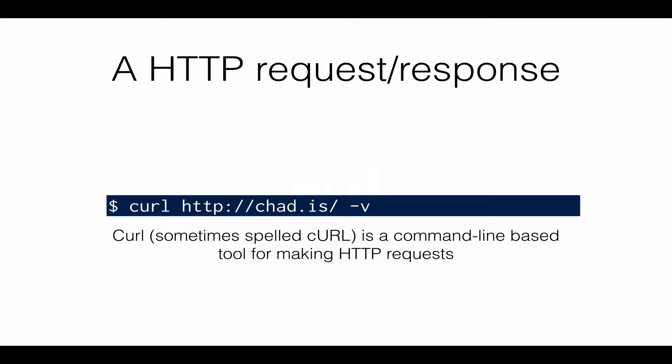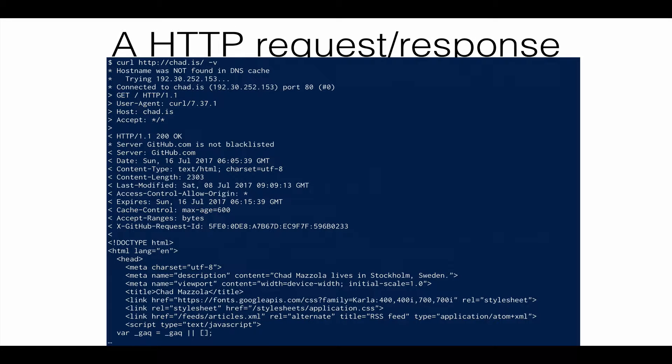So let's get started. The first thing I want to cover is the HTTP request and response — I want to show you what that actually looks like. A very handy tool is curl, which is a command line tool you can use to issue an HTTP request. I'm going to send a request to this URL, http://chat.is. The -v flag will give me extra information. If I issue this command, I will get this output.